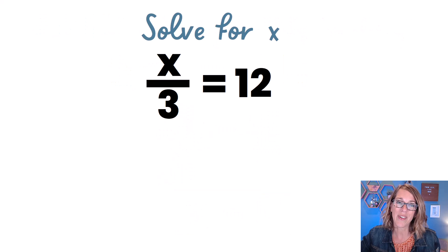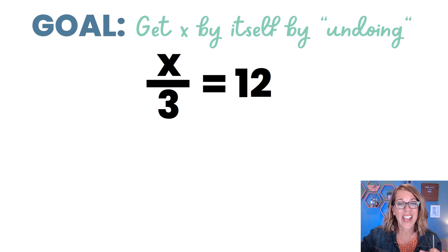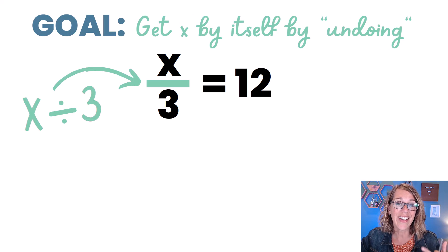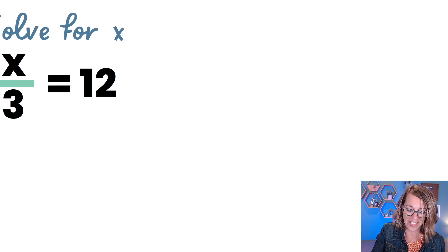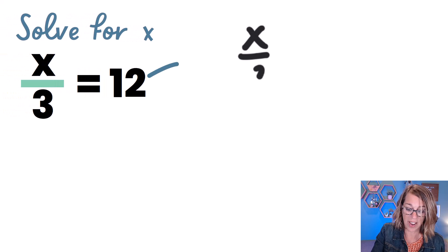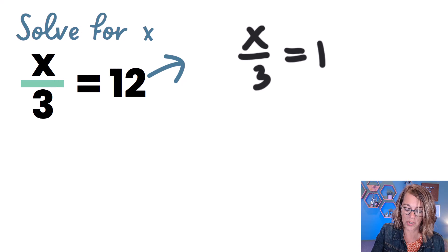In this next one, we've got a division problem. So I've got x divided by 3 is equal to 12. We again want to get x by itself by undoing, and we're going to undo that division. Let's go ahead and work through this one. So I've got x divided by 3, or x over 3, is equal to 12.